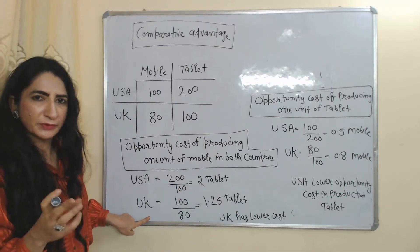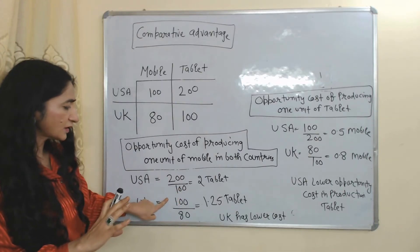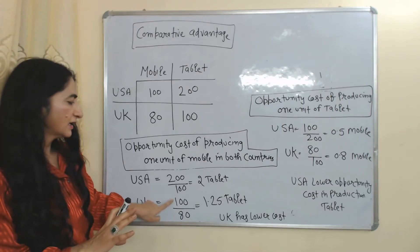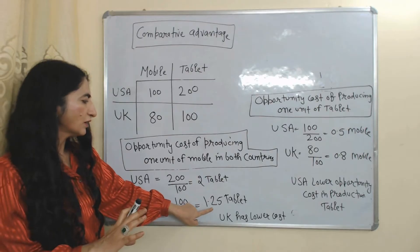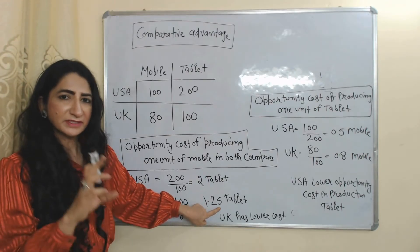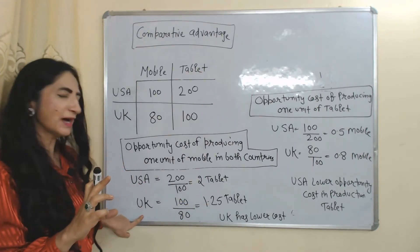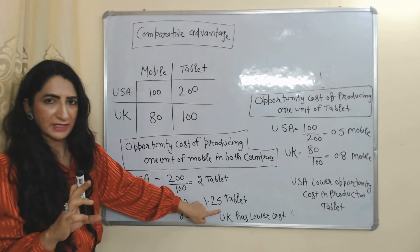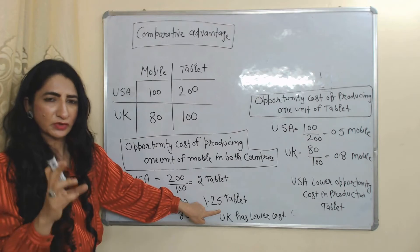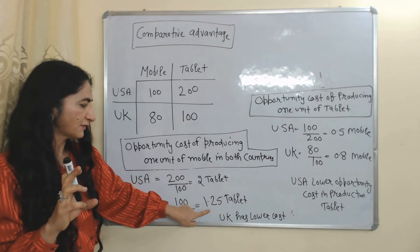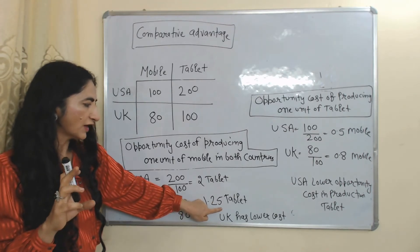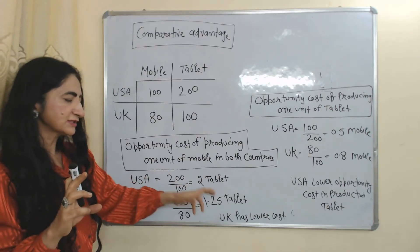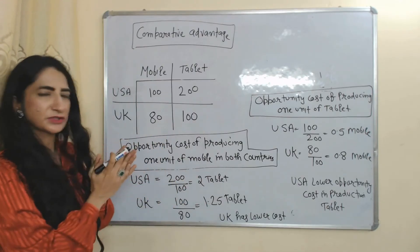Now we will see the opportunity cost of producing one mobile in UK. UK can produce 100 units of tablet and 80 units of mobile. 100 over 80 equals 1.25, meaning in order to produce one mobile, UK has to sacrifice 1.25 tablets. So in UK, the opportunity cost of producing one mobile is the sacrifice of 1.25 tablets. In this table you can clearly see UK has lower opportunity cost in the production of mobile.